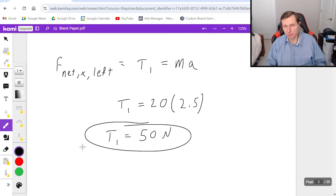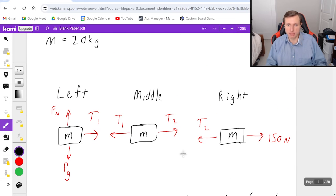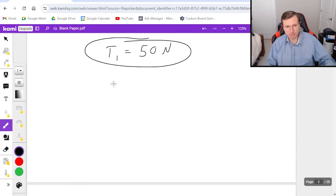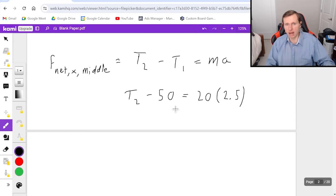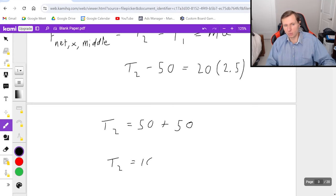Now we're going to find T2. I can either look at the middle or the right, since it doesn't matter. I'll do the middle next. So that would be F net x middle is equal to all the forces to the right, T2, minus the forces to the left, T1. That equals mass times acceleration. T2 is what I'm solving for. T1 we just found to be 50. And mass is 20 kilograms, acceleration 2.5. So now if I want to solve this, I add 50 to both sides, T2 equals 50 plus 20 times 2.5 is also 50. Looks like T2 is going to be 100 newtons.